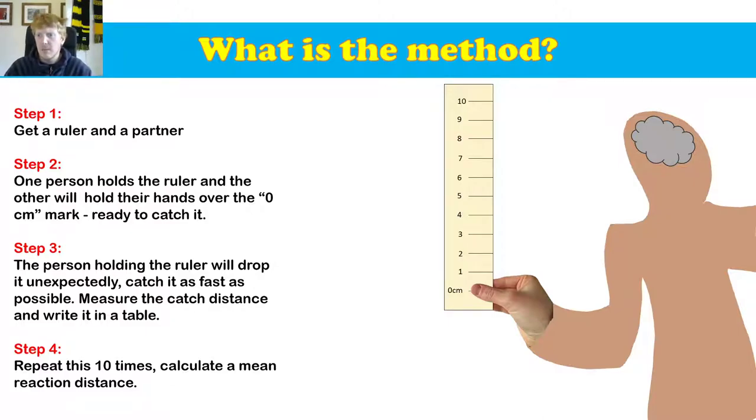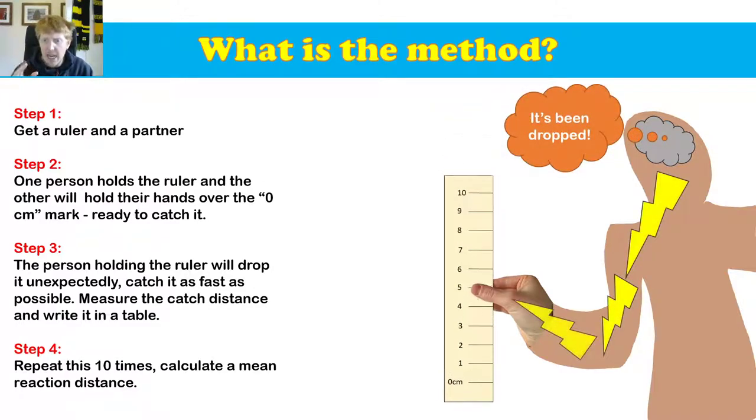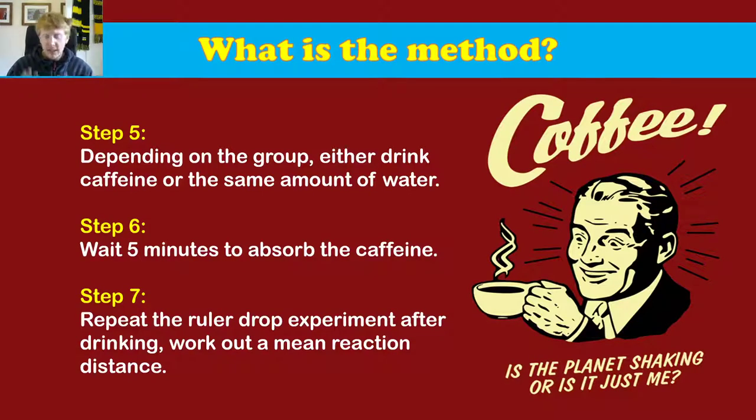So let's have a look at this stunning animation. Ruler's dropped, you send a signal to your hand and your hand catches it as fast as possible. You've grabbed that ruler, right? And what you can see is it's taken zero, one, two, three, four, it's taken you five centimeters to catch the ruler, and that five centimeters is our reaction distance. That's what we write in the table.